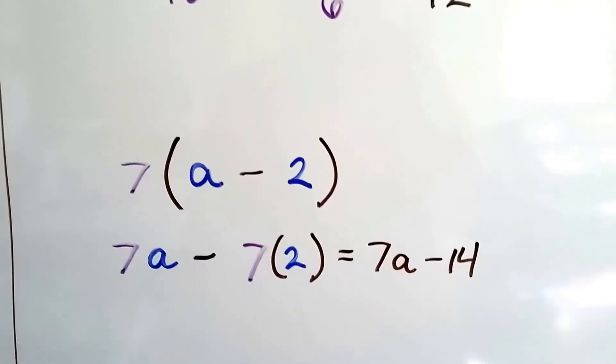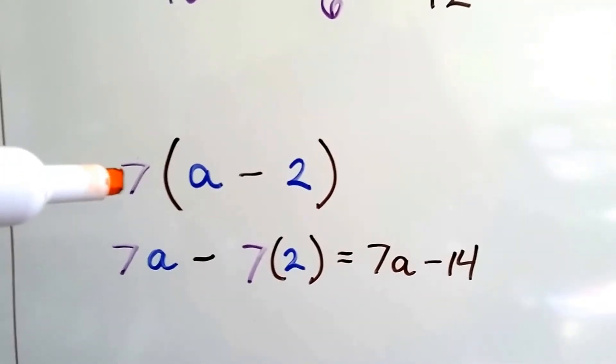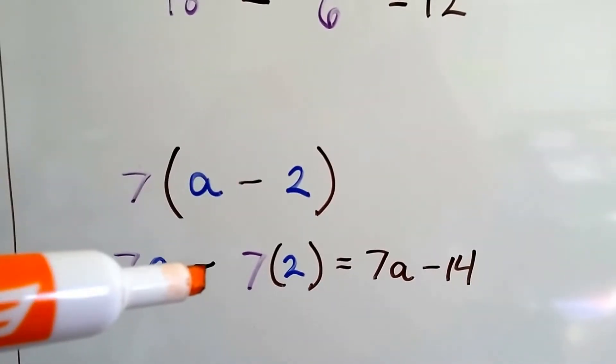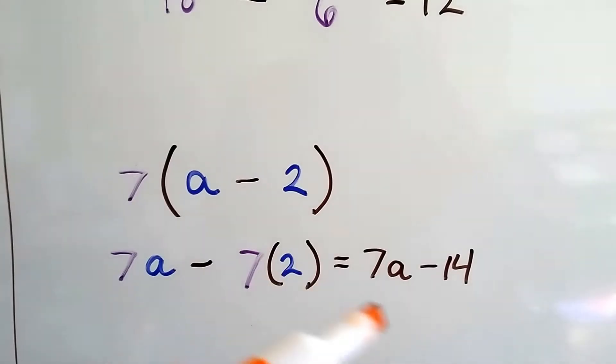What happens when we throw a variable in? Well, we distribute the 7 to the a. So we have 7 times a. We drop our minus sign and then 7 times 2. 7 times 2 is 14. And because we don't know what a is, that's as much as we can simplify that expression.